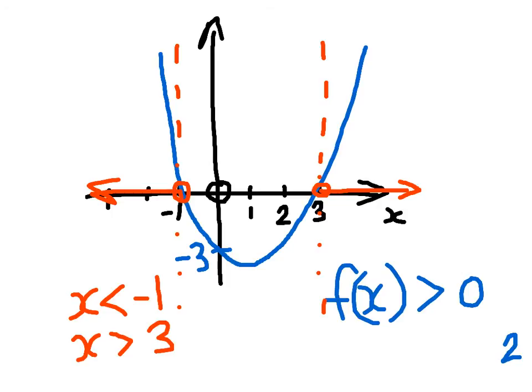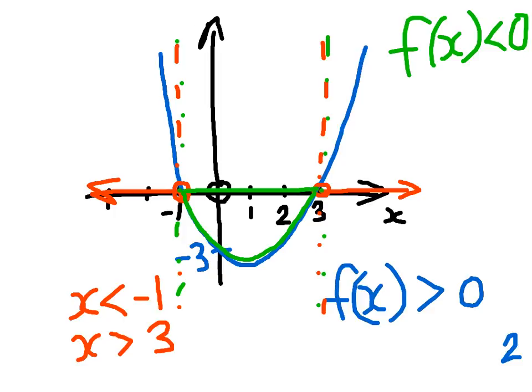If for example we had that the original inequality so the function of x was less than zero, in other words between these points again but with it being less than zero, this time our curve is underneath and therefore we need to know that it is this range from negative 1 to positive 3. And therefore we can write out the range so that x is greater than negative 1 but less than 3.